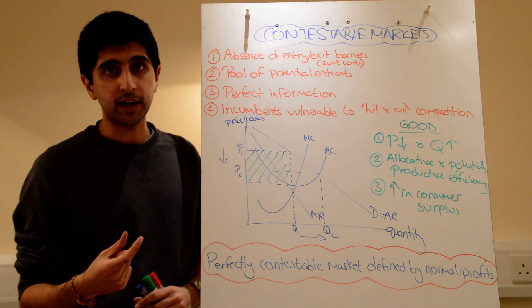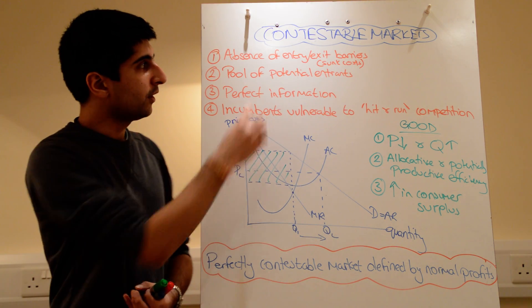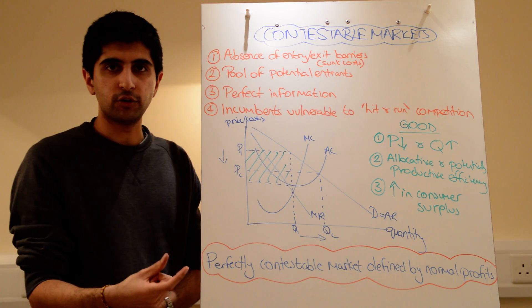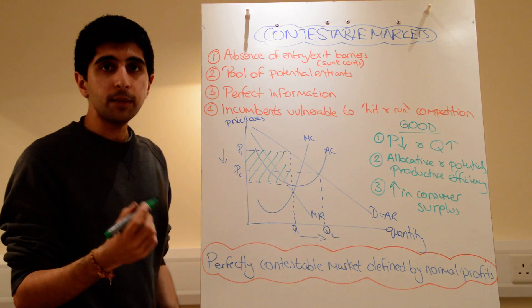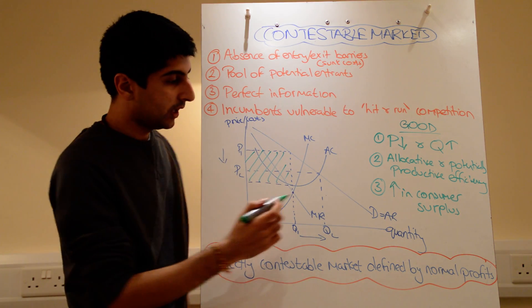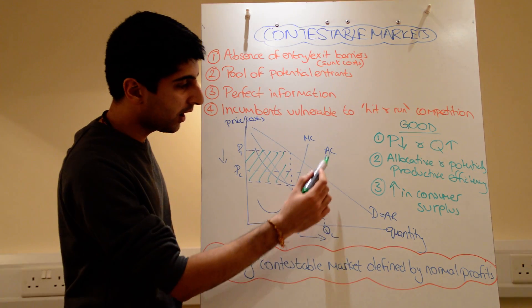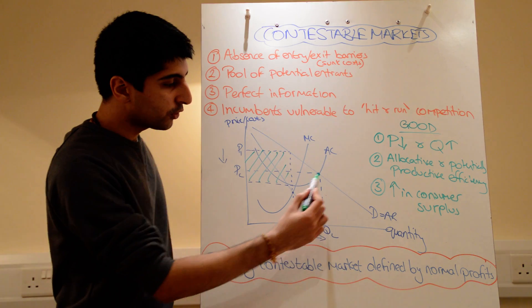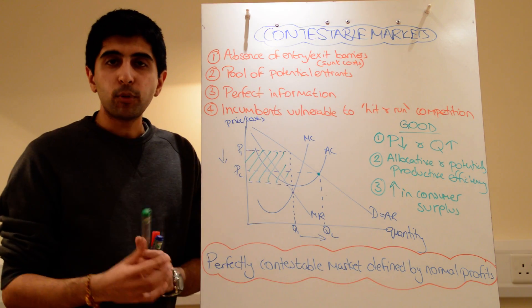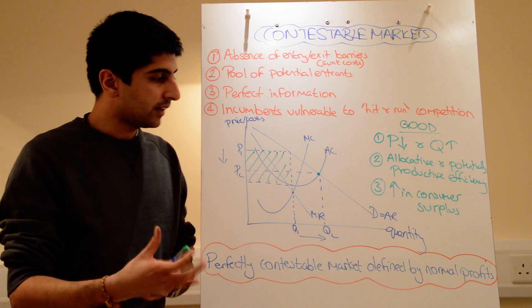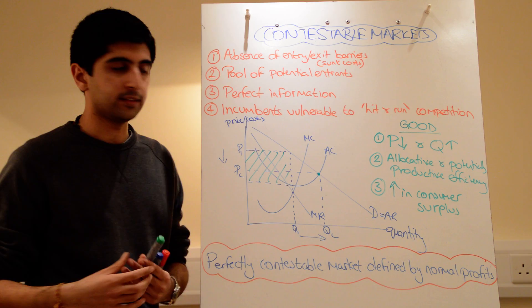Now in a perfectly contestable market, any supernormal profits being made, because of no entry barriers, will incentivize new entry. Therefore, in a perfectly contestable market, the only place for this monopolist to go now is to the point of normal profits, where AR is equal to AC. That's the only logical place to go, so at QC, PC. At that point, there's not going to be any incentive for new firms to get in, because only normal profits are being made where AR equals AC.